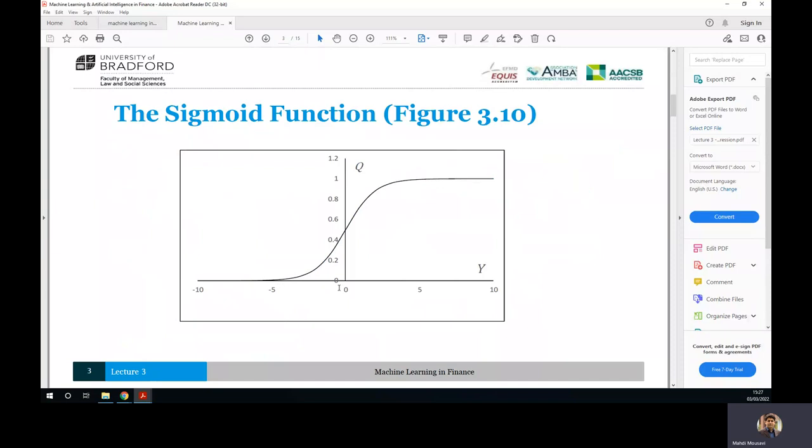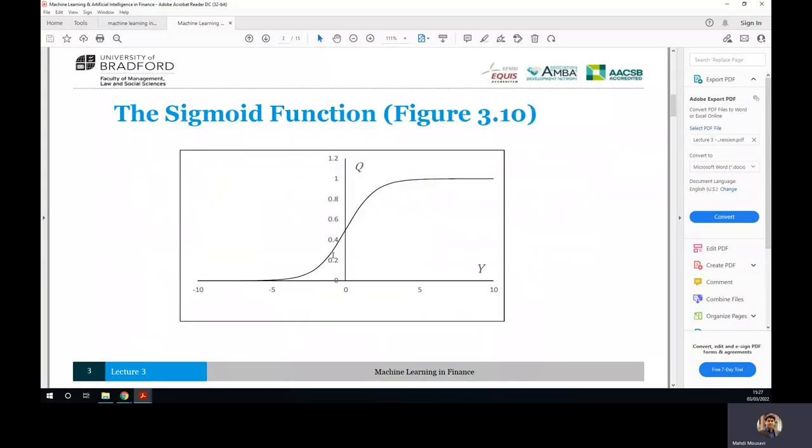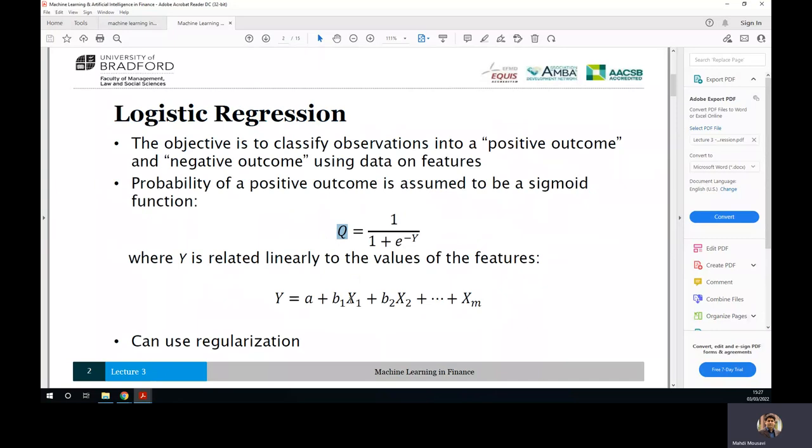So take this one into account as well. But usually, if you go, for example, y minus 5 and put it in this equation, 1 over 1 plus e in power of minus 5, it would be very close to zero. So the probability would be very close to zero.